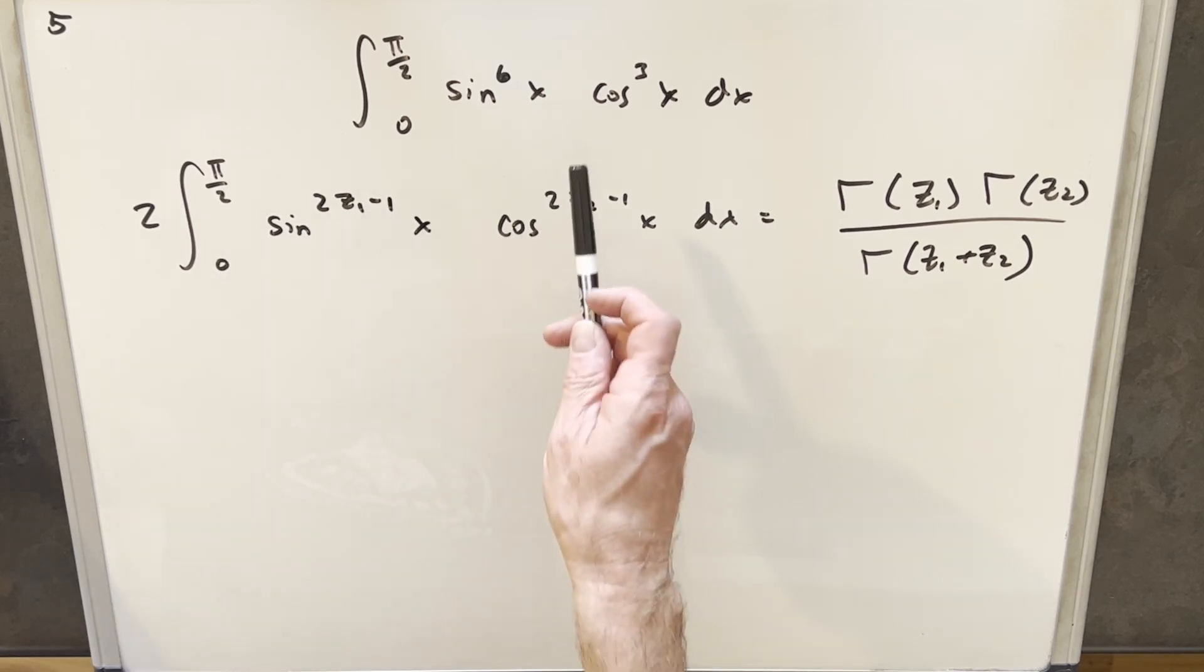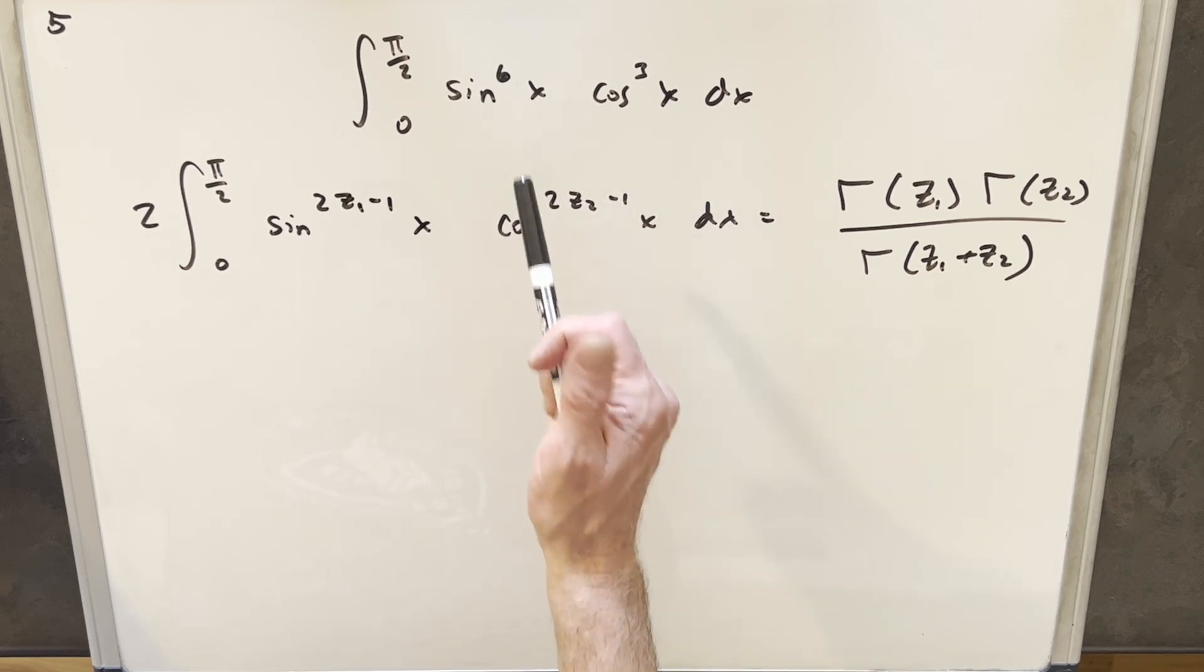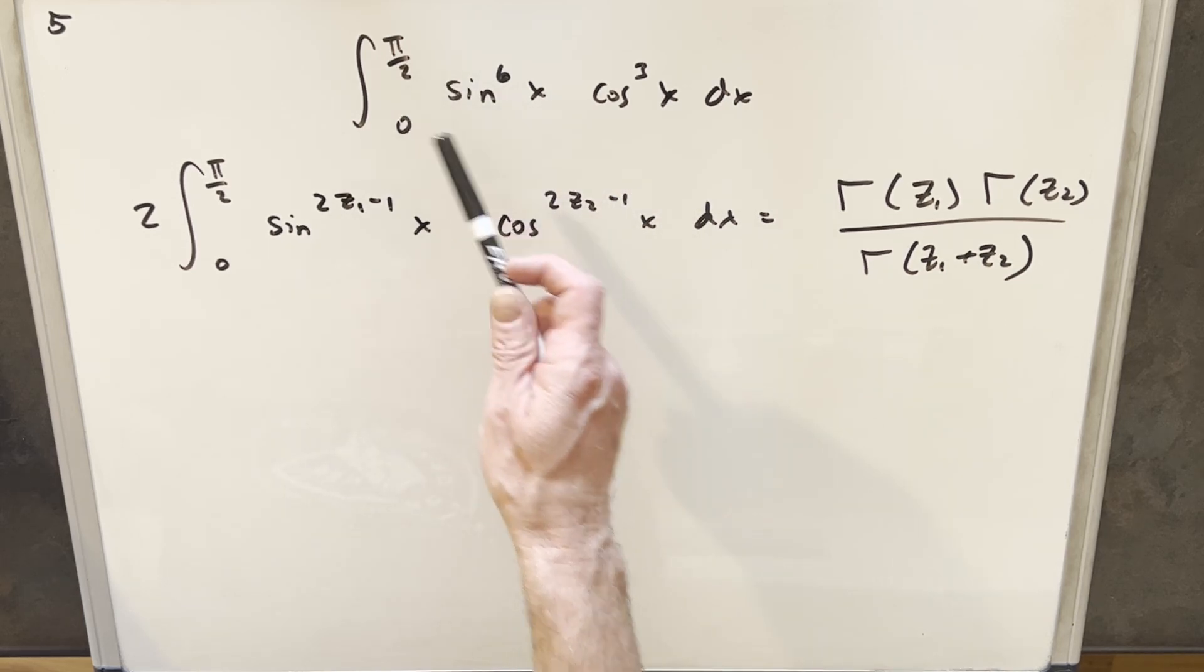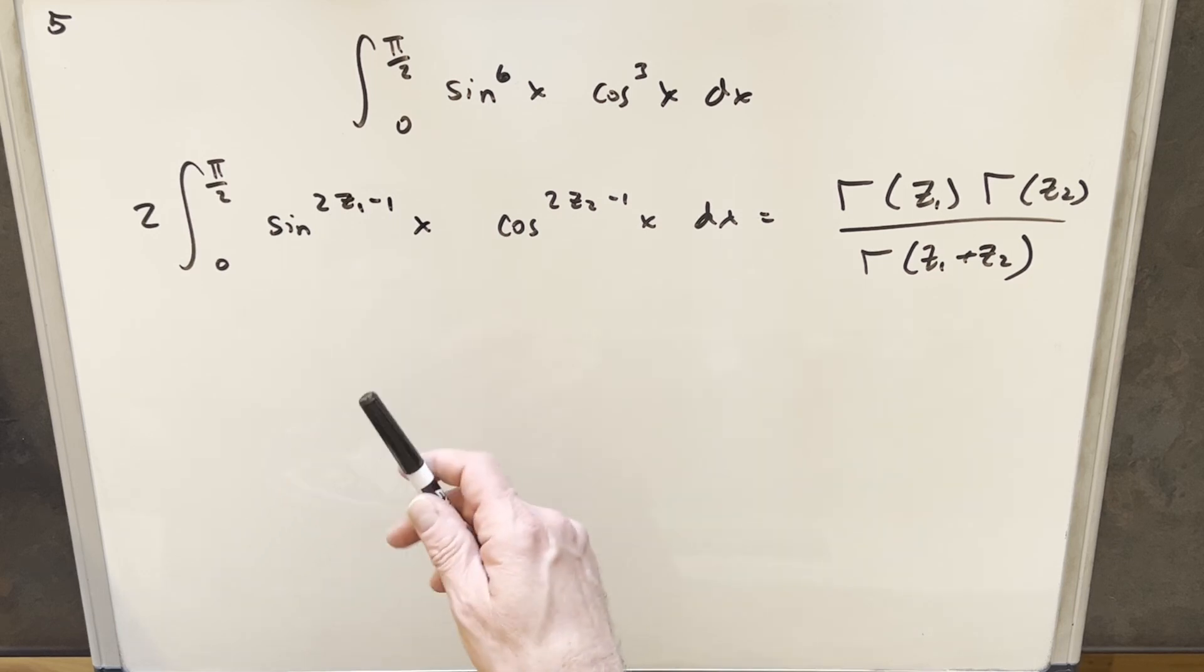Interesting thing: if we did the usual way that I mentioned before, the u substitution, the bounds turn to 0, 1, and it actually ends up looking like the beta function that we may know. And then by doing that, you can actually see the connection between the two formulas because it becomes clear by doing that u substitution.